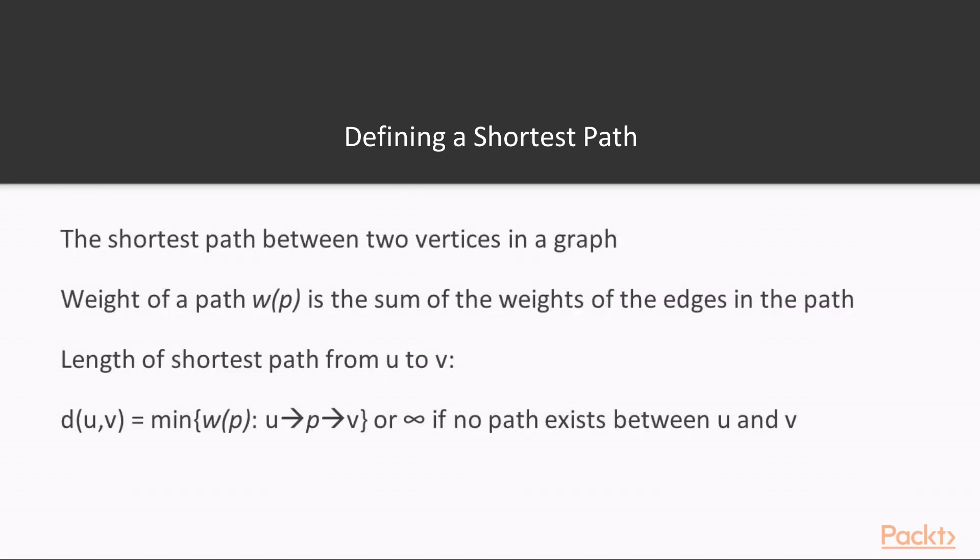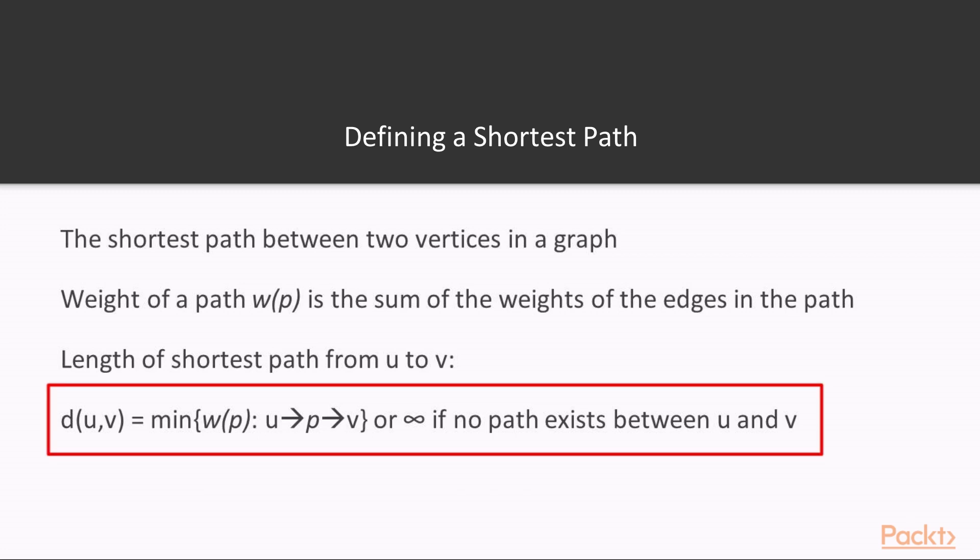A shortest path is quite simply the shortest path between two vertices in a graph. We define the weight of a path as the sum of the weights of the edges in the path. With this we can define the length of a shortest path from vertex u to vertex v as a minimizing function, where we wish to find the path from u to v with lowest weight, or if a path doesn't exist between u and v we set the length to be infinite.